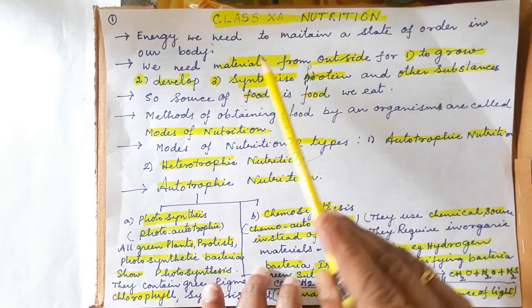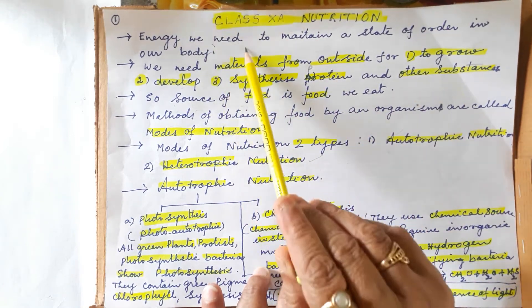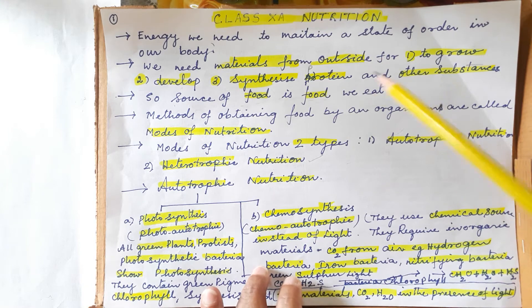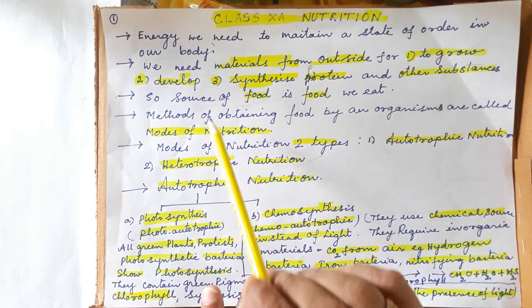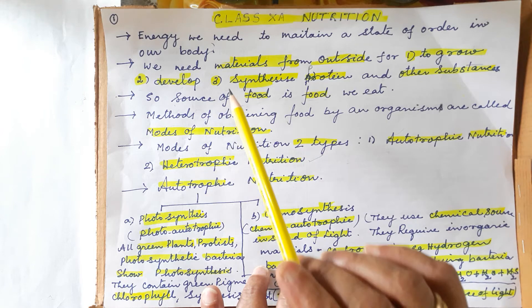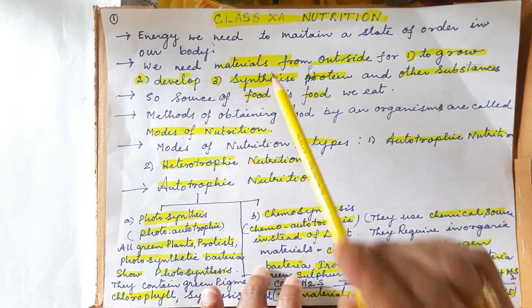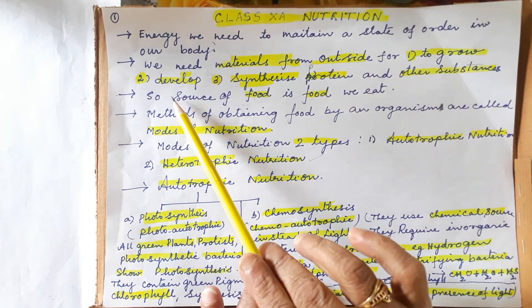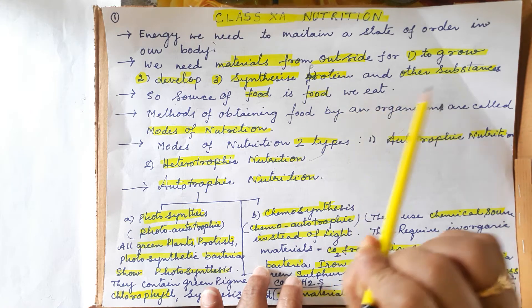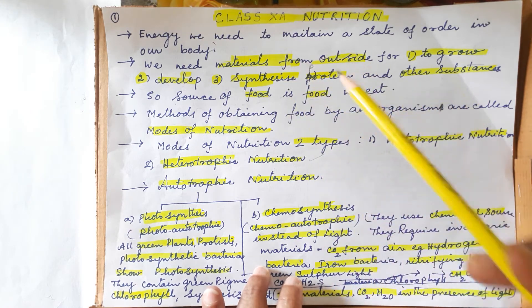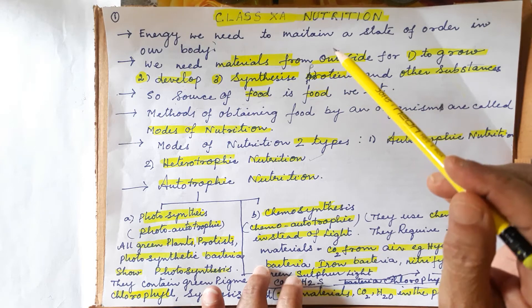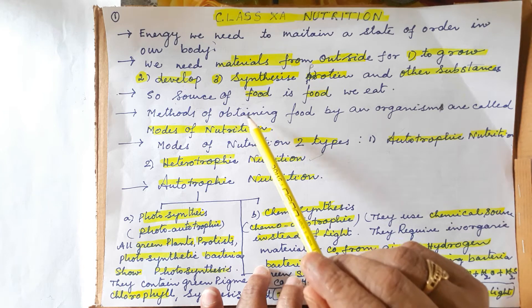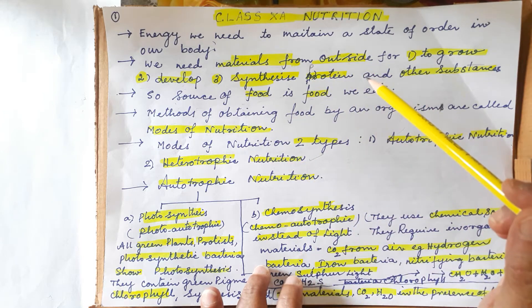Internally, the physiological activities of the body — all the systems of the body — also need energy. We need energy to maintain the state of order in our body and keep it functional. We also need materials from outside for purposes like growth, development, and synthesizing proteins and other substances. The body continuously synthesizes proteins, and for that also we need energy.